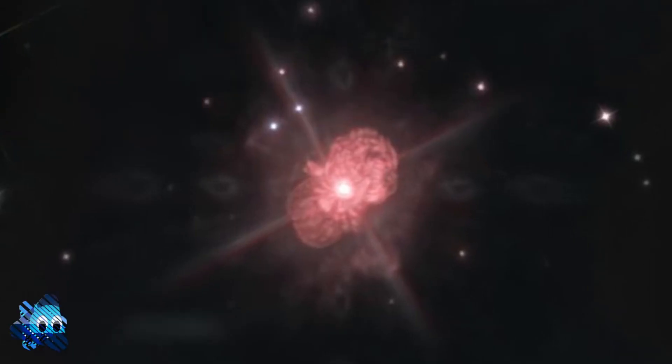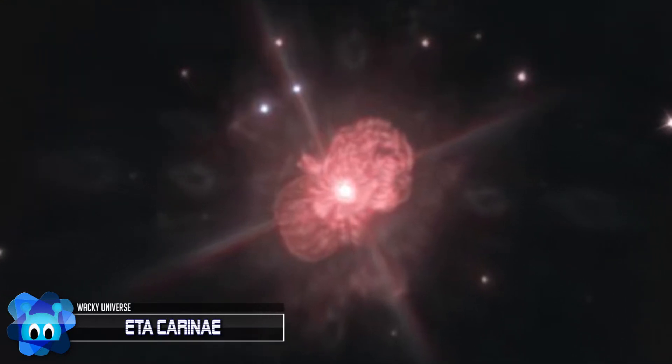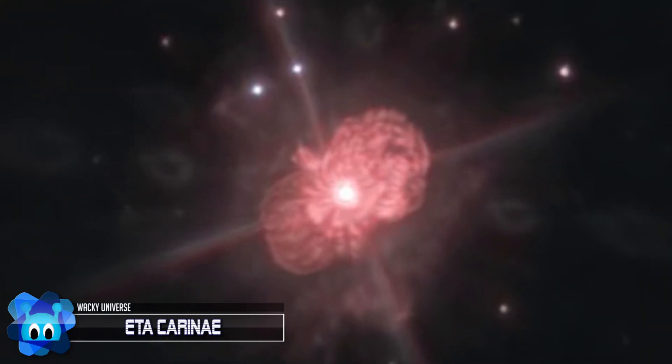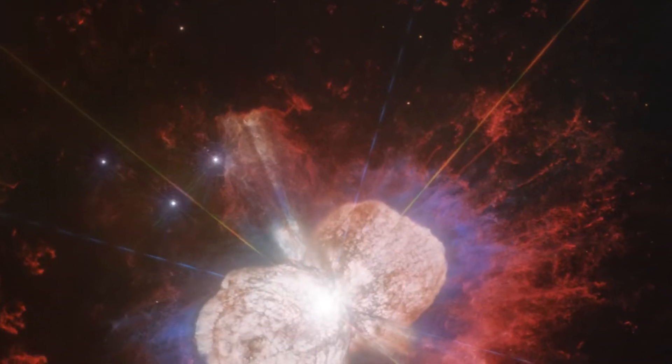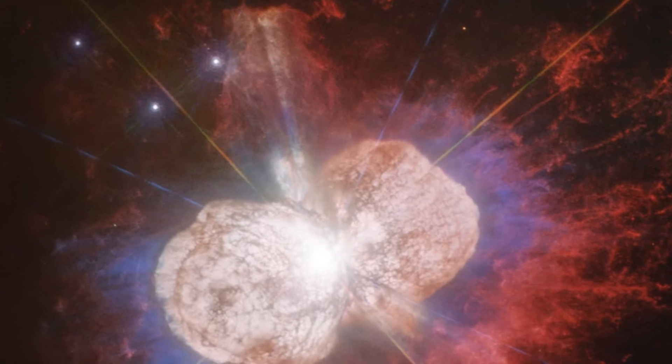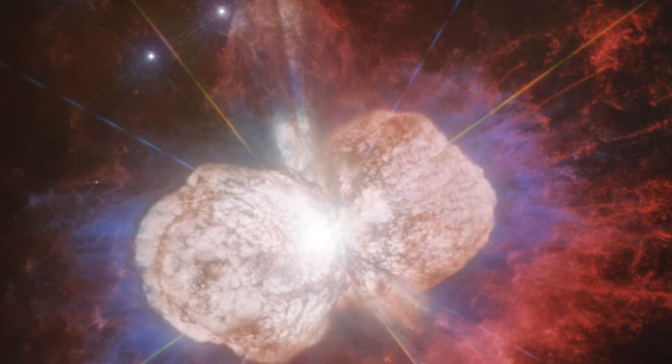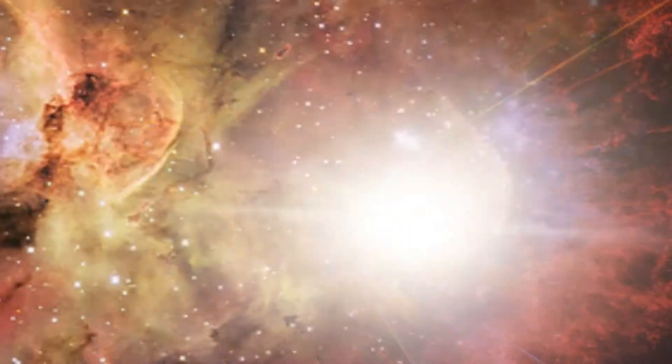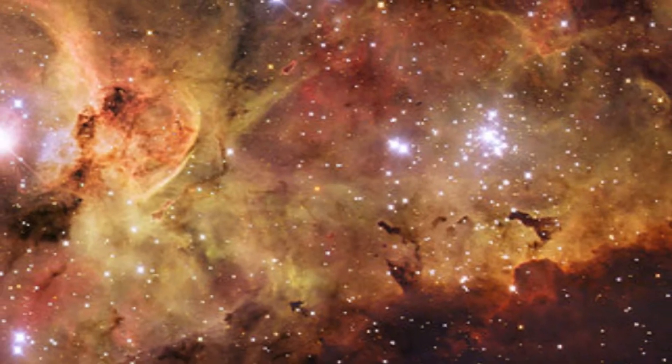Number 6: Eta Carinae. Eta Carinae is the brightest and biggest solar system within 10,000 light years of us. And in 1838, the double star system flared to become the second brightest star in the sky for a time. The energy produced from this great eruption should have been enough to create a supernova, but such a blast would mean the death of one if not both stars.